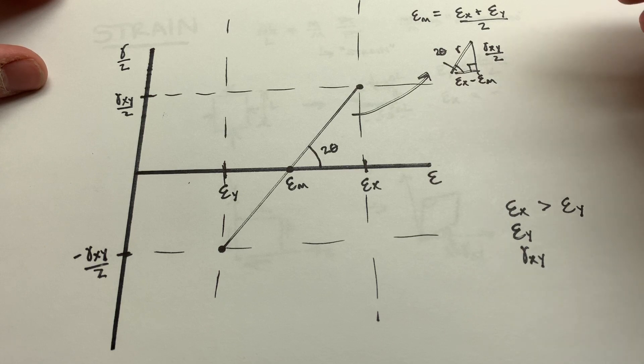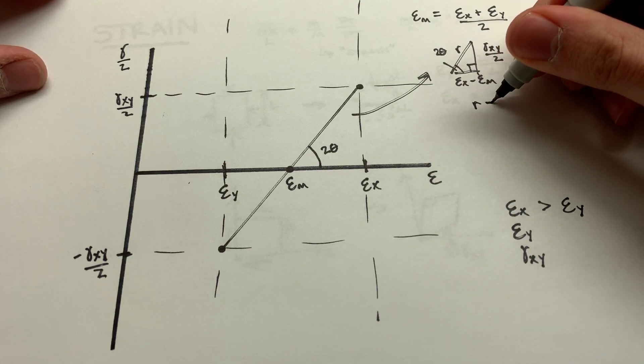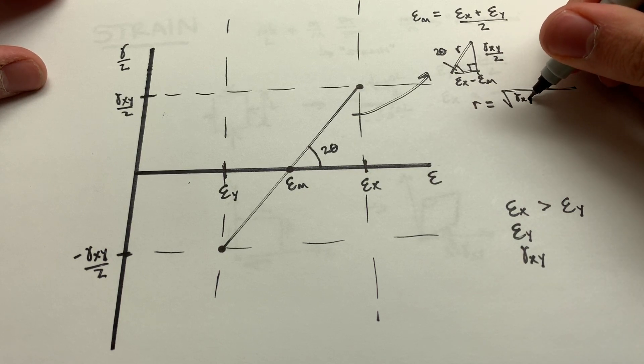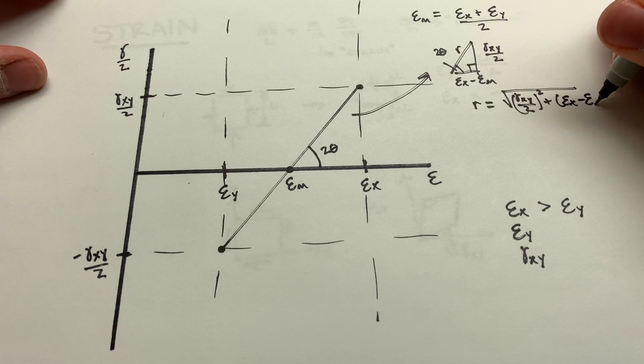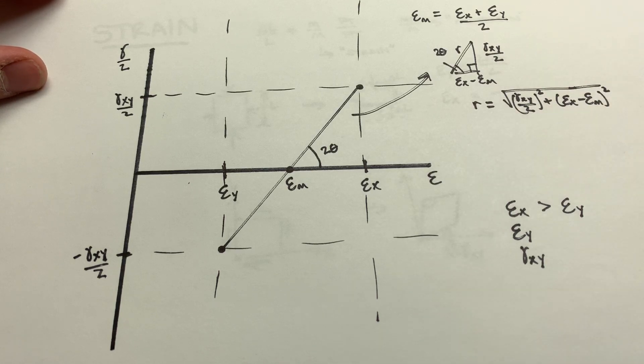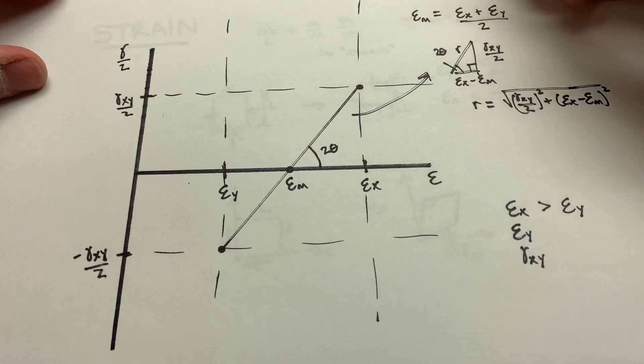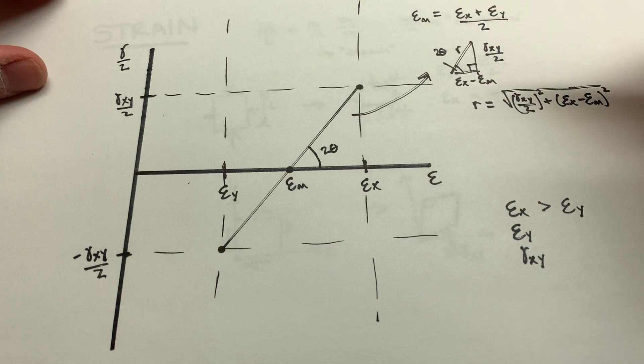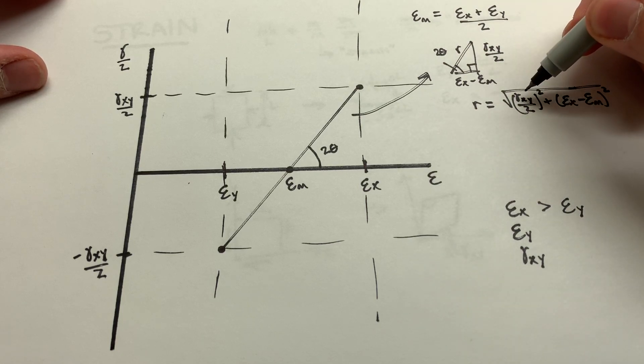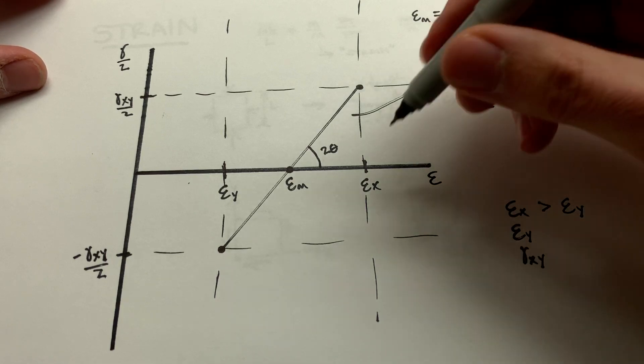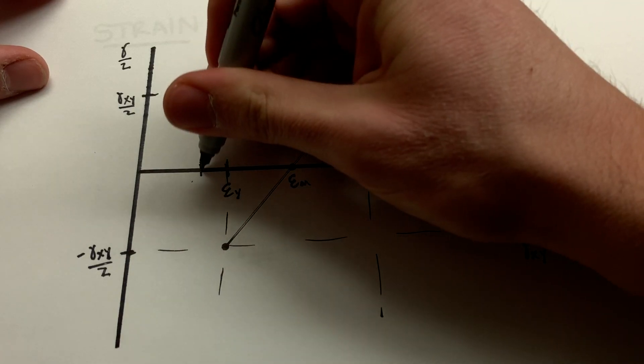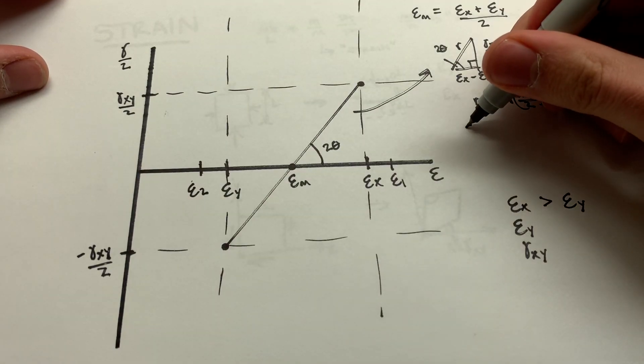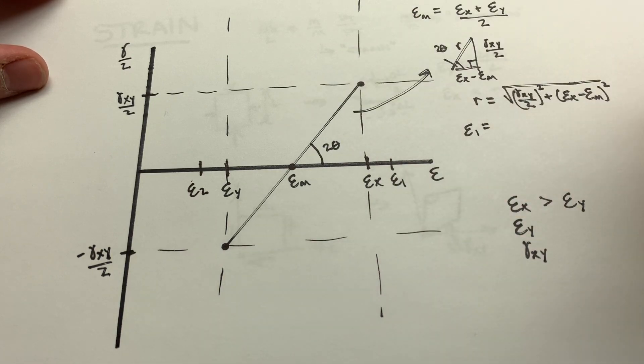And then this is a right triangle where we can use the Pythagorean theorem to find r here. So r is going to be equal to the square root of gamma xy over 2 squared plus the difference between epsilon x and epsilon m squared. And then you can go ahead and plug in your value for epsilon m again if you want this strictly in terms of your xy and your gamma xy. And then what you'll find then is you'll go some distance r out here and you'll find epsilon 1. You'll go some distance r backwards and you'll find epsilon 2. So these are your principal strains, your maximum and minimum that will occur. And these also occur, you'll notice, where the shear strain is equal to 0.